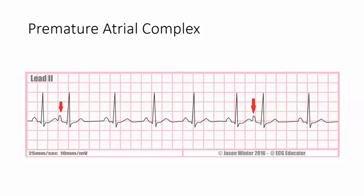We're going to talk about a premature atrial complex. This occurs when an irritable focus within the atria fires before the next SA node impulse is due to fire. So it's a premature beat.